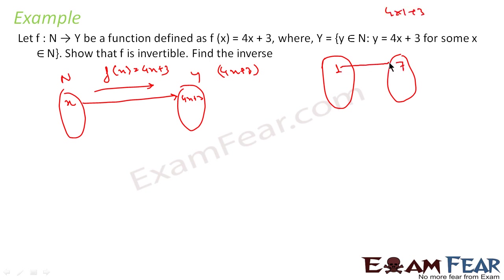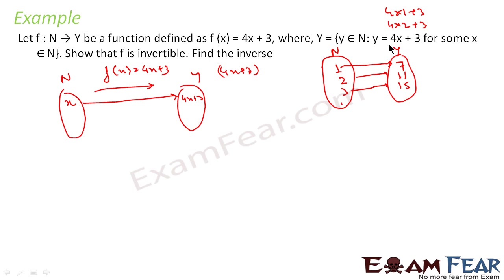If you take x = 2, the mapping will be 4 into 2 = 8 plus 3, that is 11. If you take x = 3, this will be 4 into 3 = 12 plus 3 = 15, and so on. This is the relation from N to Y, and Y is any number that follows the pattern 4x + 3 for any natural number x.